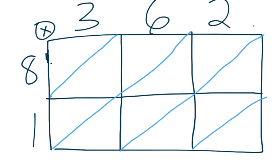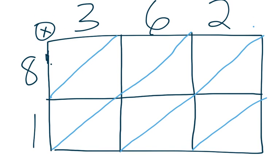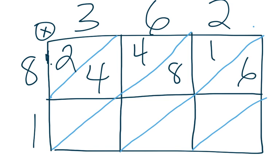Bring this down just a little bit more. 8 times 3 is 24. 8 times 6 is 48. 8 times 2 is 16. 1 times 3 is 3. 1 times 6 is 6. And 1 times 2 is 2.